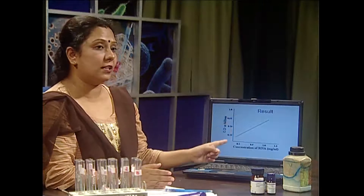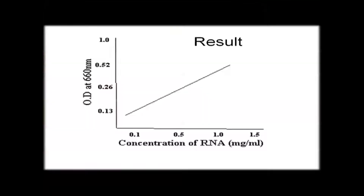Without any reagent blank, you cannot perform any spectrophotometric analysis. Where we have the series of standards, you can make a calibration curve with optical density at 660 nm on one axis and concentration of standard RNA in mg per mL on the other axis, forming one straight line.